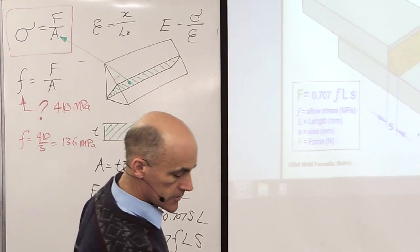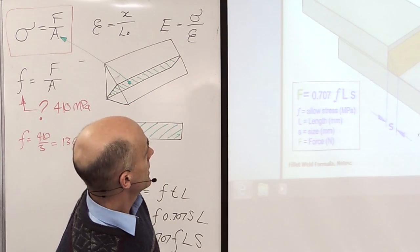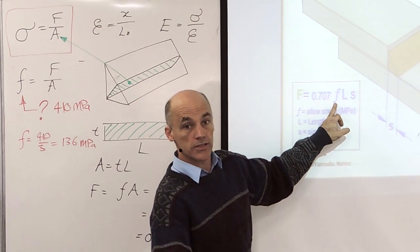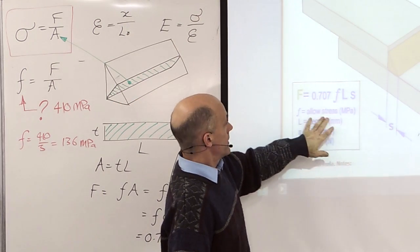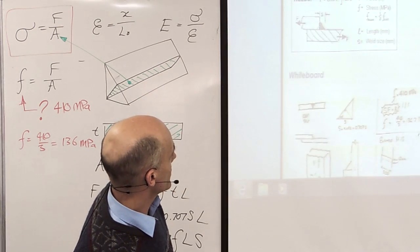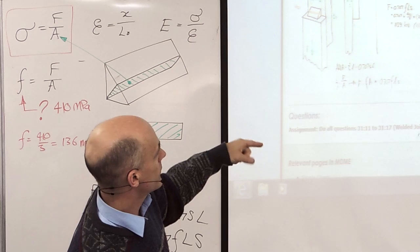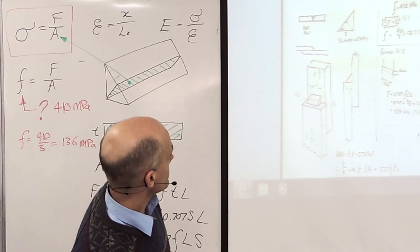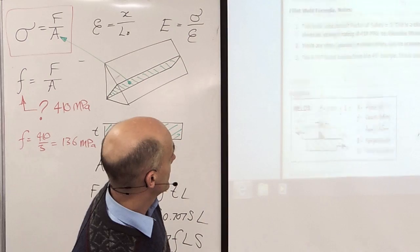But for the questions we're doing, we'll either be given the allowable stress of the weld, which is just given in the question, or it might be that you need to apply the factor of safety. All the ones in the book use factor of safety on a 410 electrode. So they're all 136. That's it.